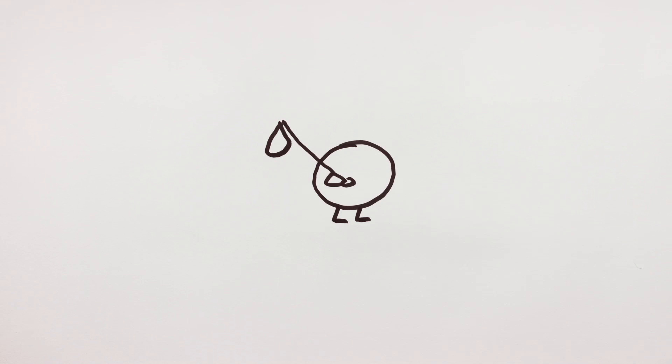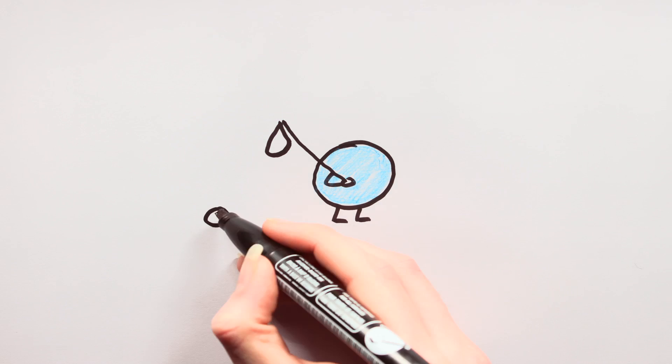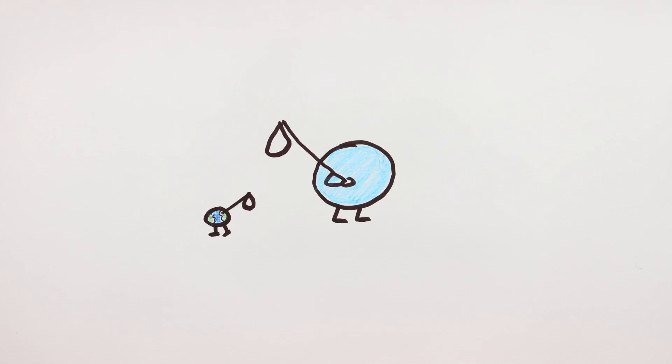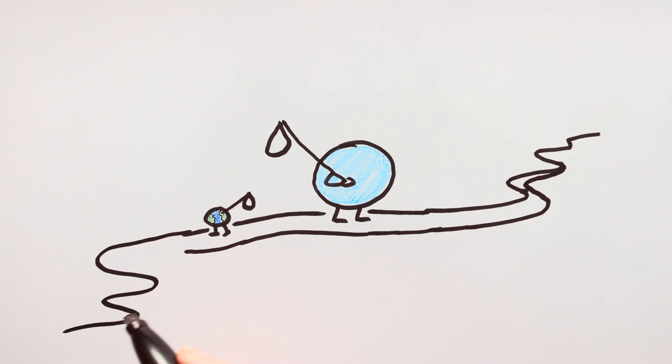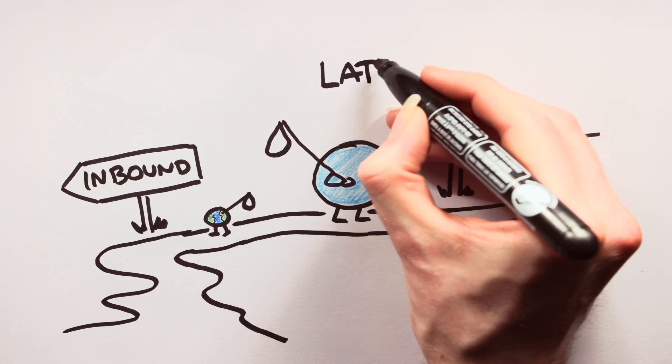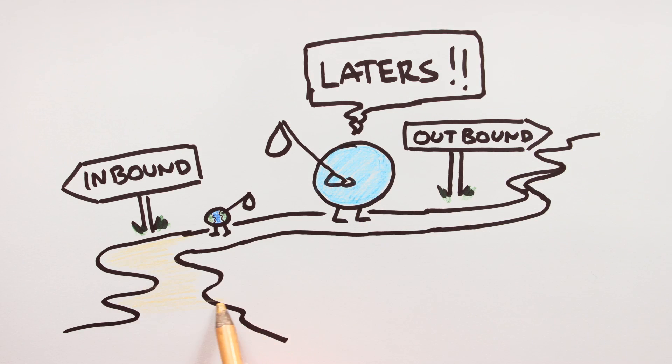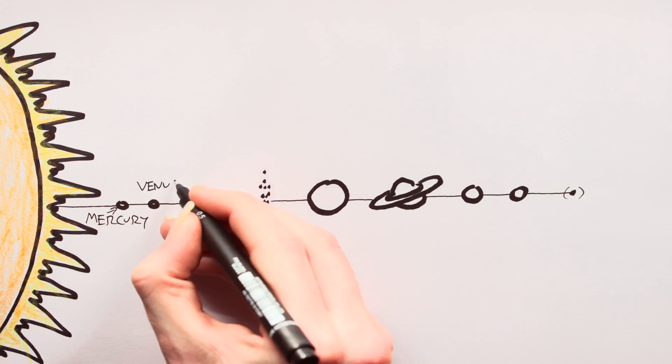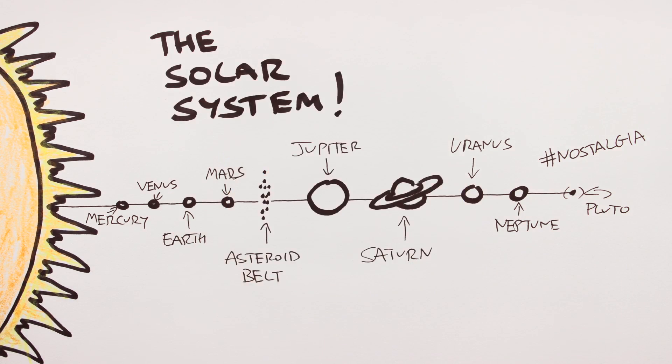Planetary migration is a poorly understood, yet essential part of how our solar system came to be. Simply put, it is believed that Neptune and Uranus formed much closer into our sun and then migrated outwards, whilst the inner solar system planets tended to migrate inwards, eventually slotting into the nice orderly configuration we call our solar system.